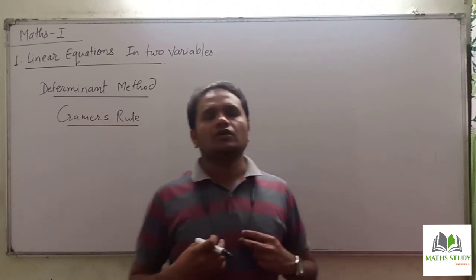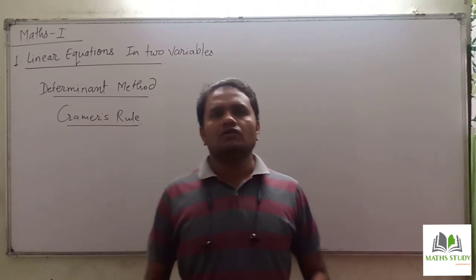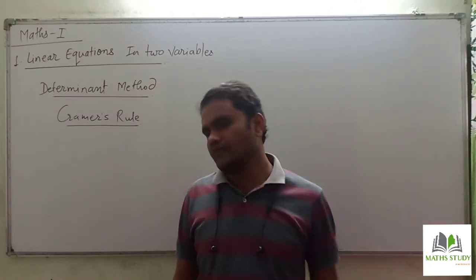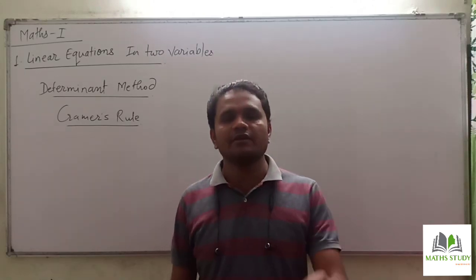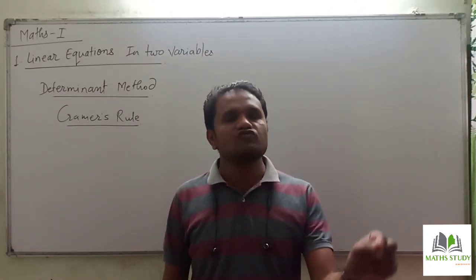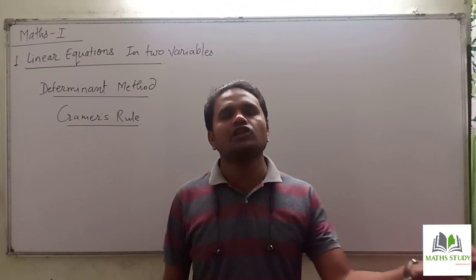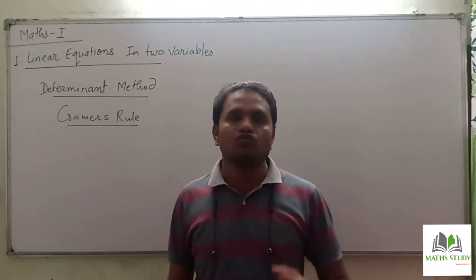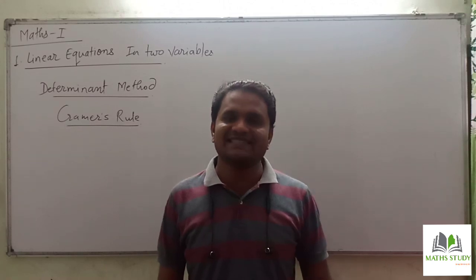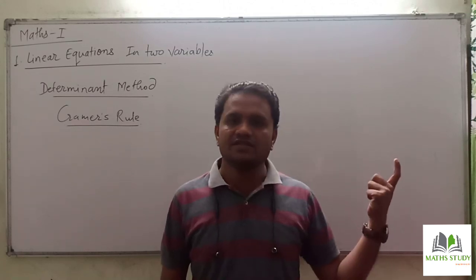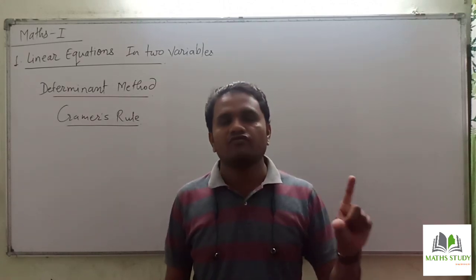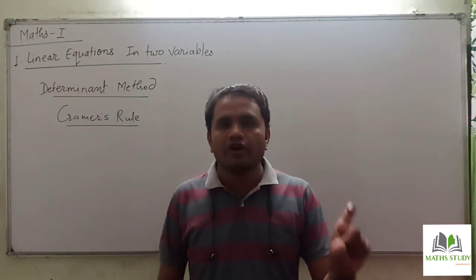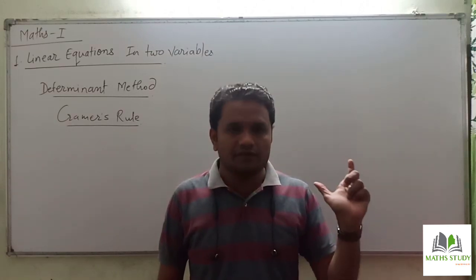In Cramer's Rule, our ultimate aim is always the same — to find the values of variables, whether they are x, y, a, b, q, m, n, or whatever. In other words, we have to find the solution of the given equations.